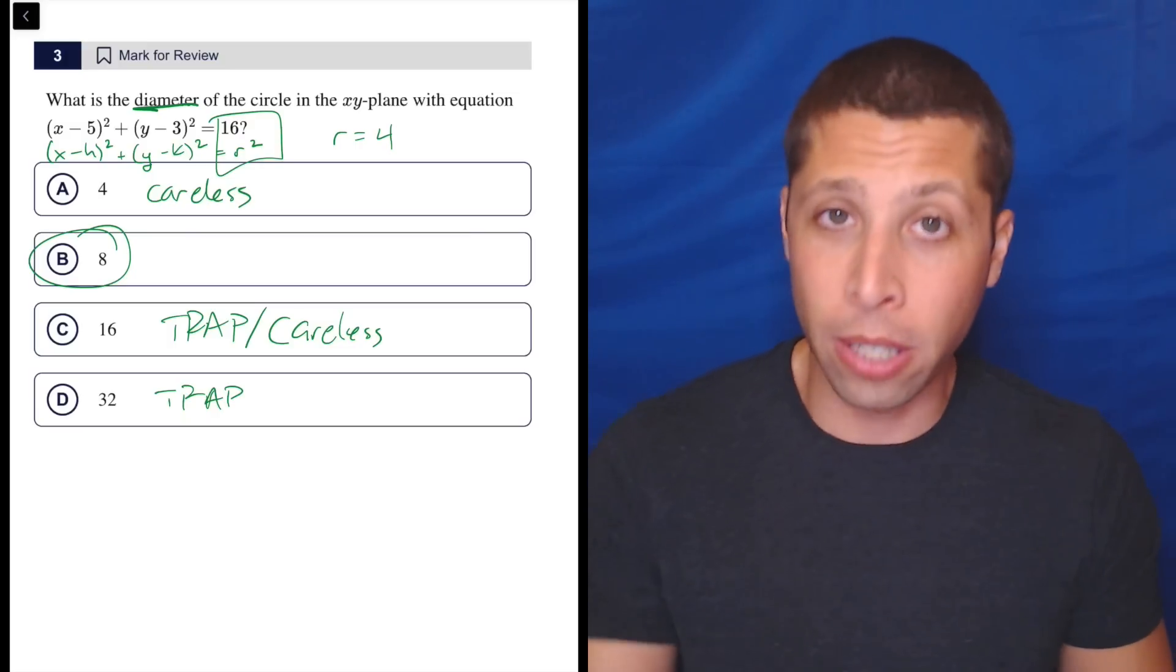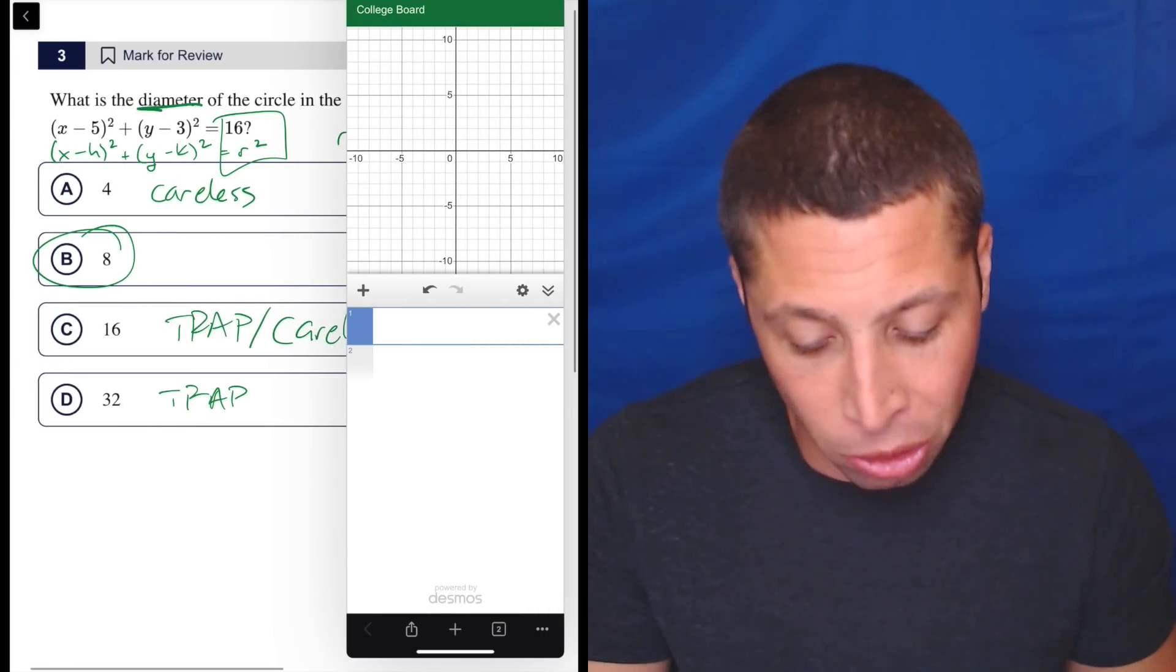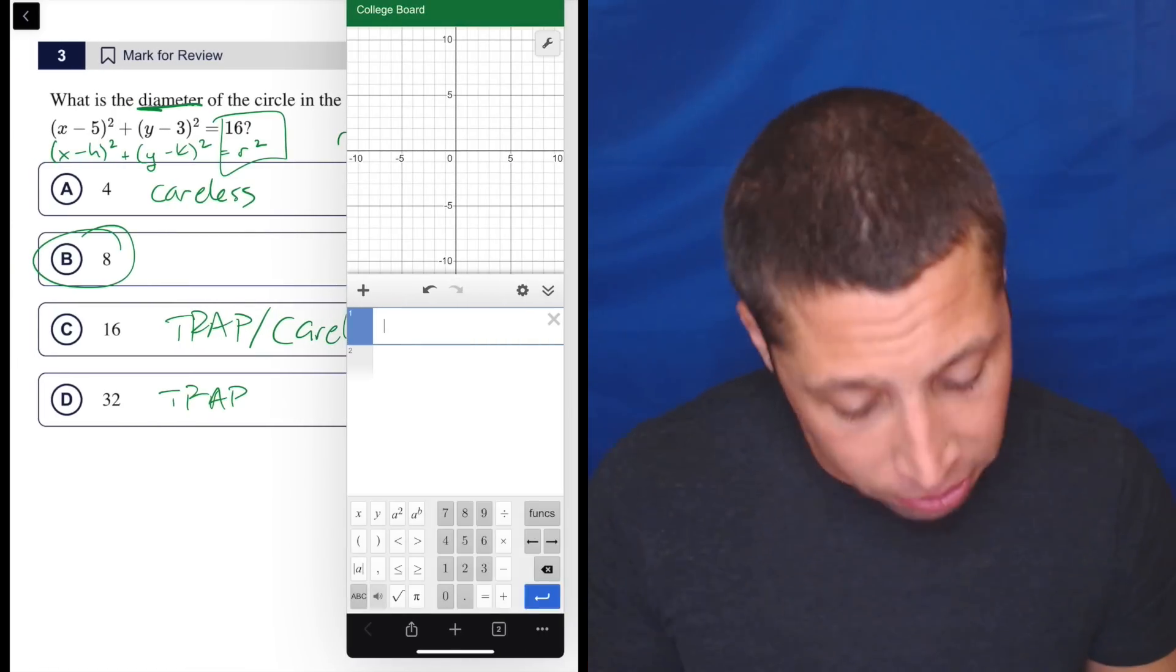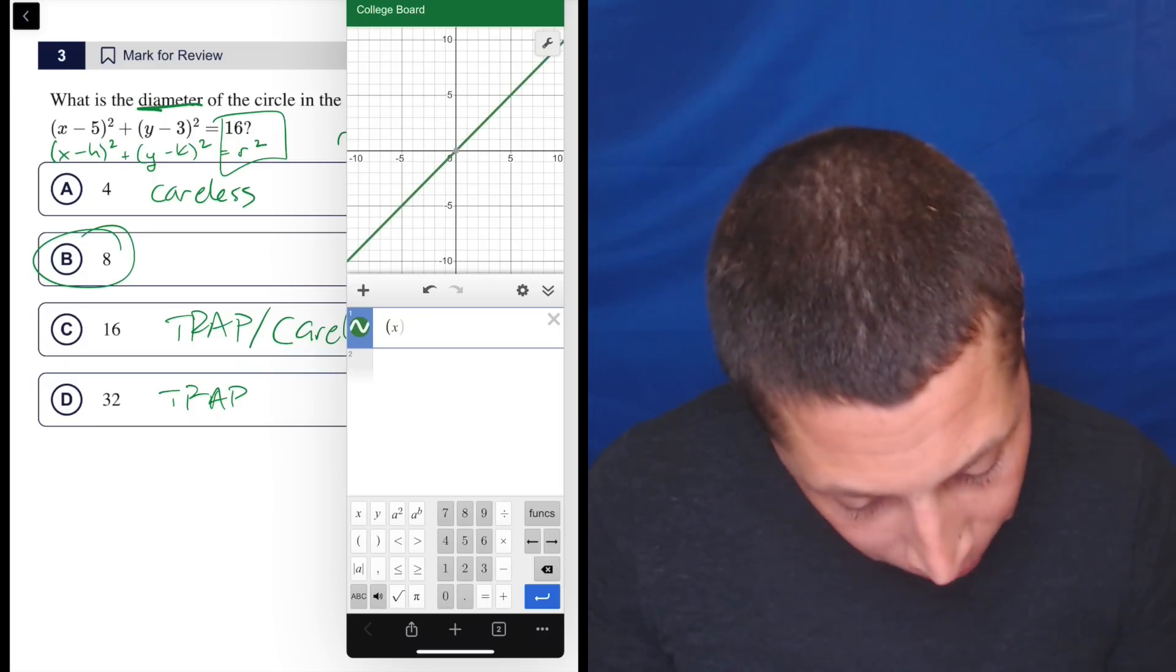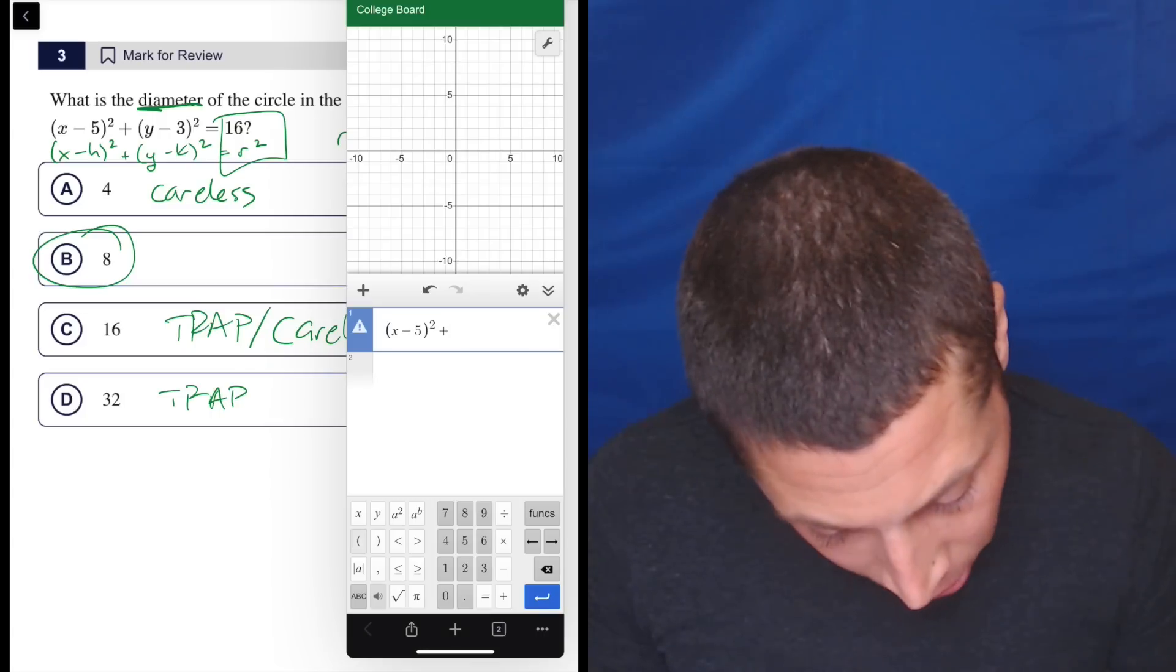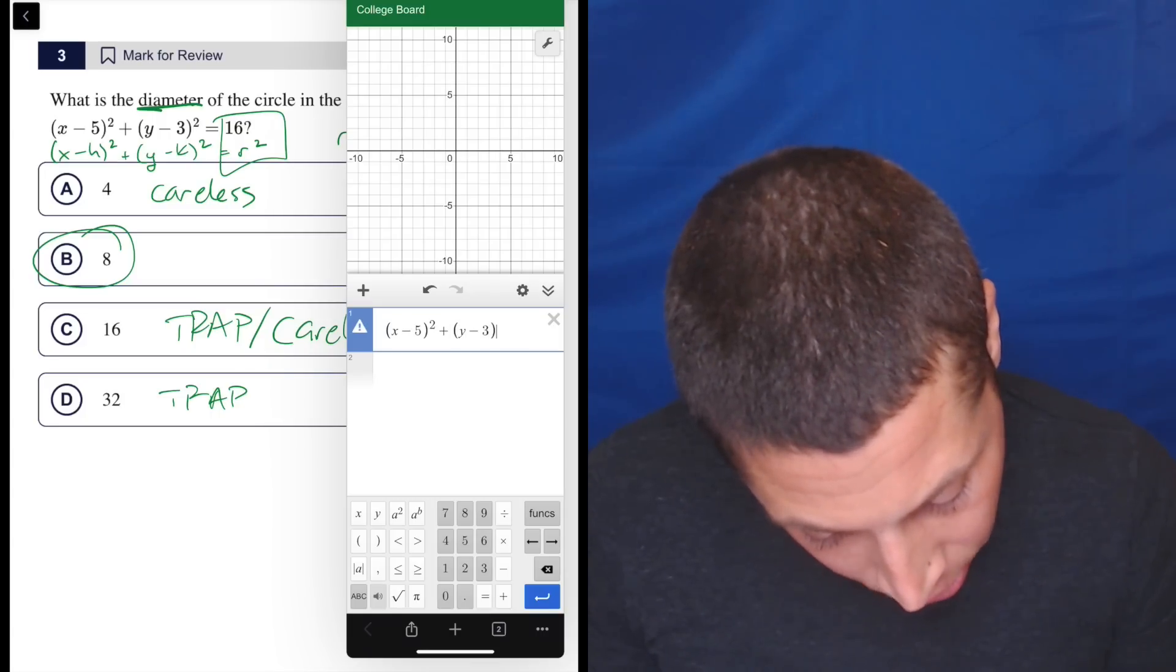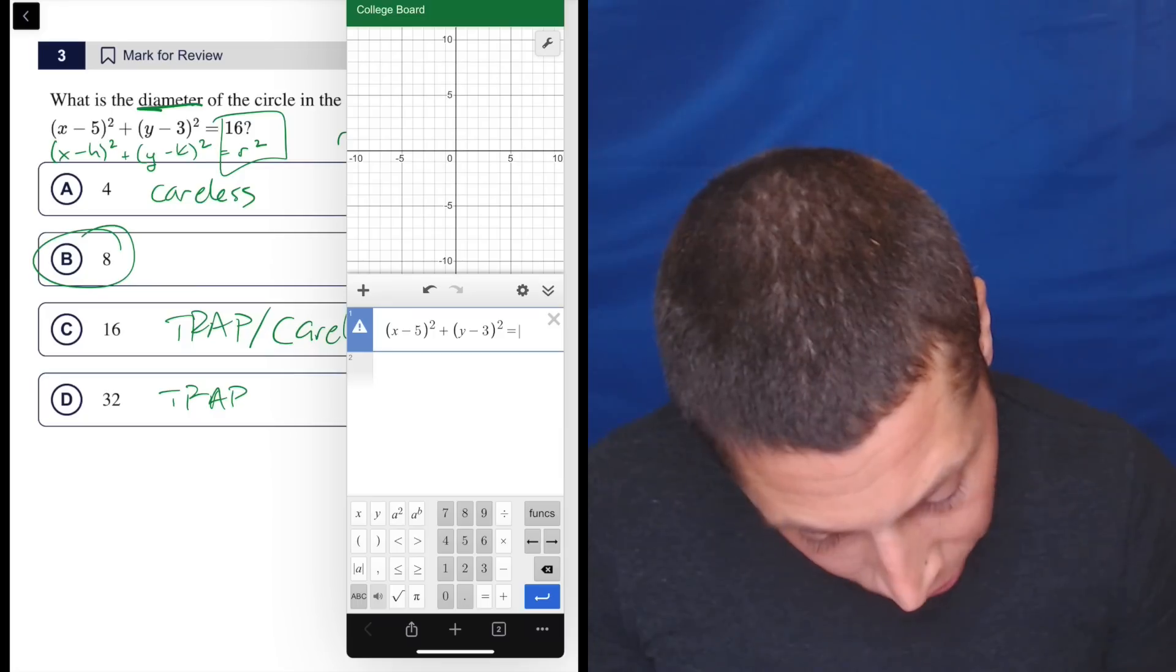If for some reason you did not know the circle formula, which you should—it's very important for at least one question per test—we could put this thing in Desmos. I don't love it, but I'm going to show it to you anyway. X minus 5 squared plus Y minus 3 squared equals 16.